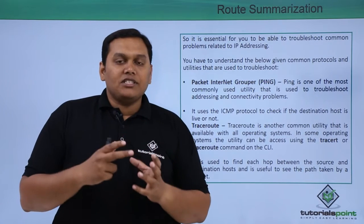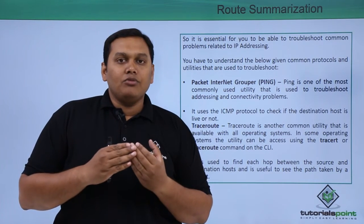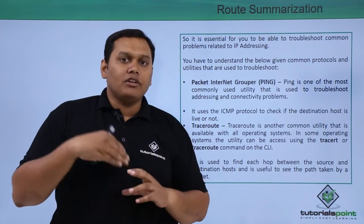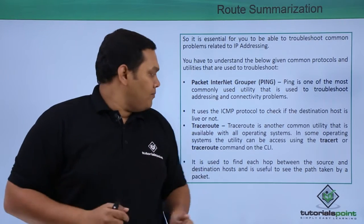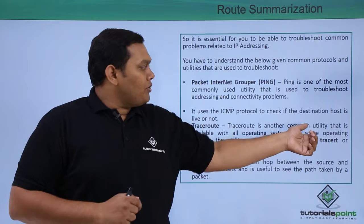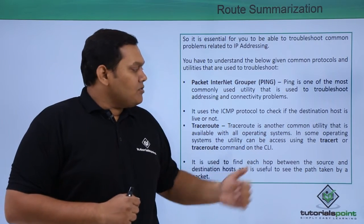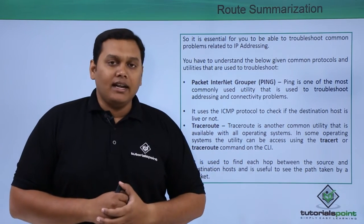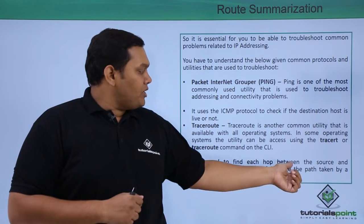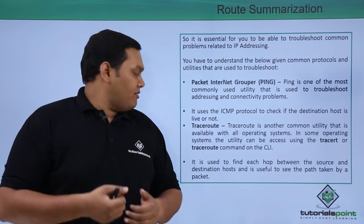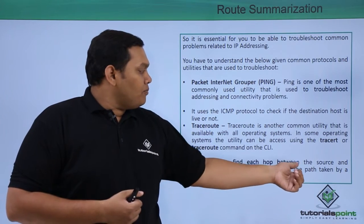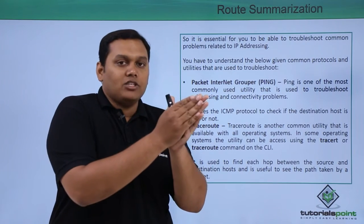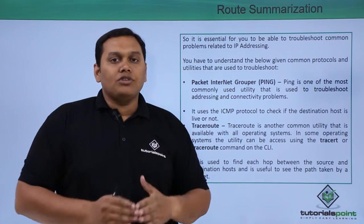ICMP is a messaging protocol. When this messaging protocol approaches a host and the host does not respond, it will give you a response back stating it is not getting connected. Traceroute is another common utility used with all operating systems — also called tracert on the command line interface. It is used to find out the hops between source and destination, how many hops are available, the path taken by the packet, and the hop count between source and destination.